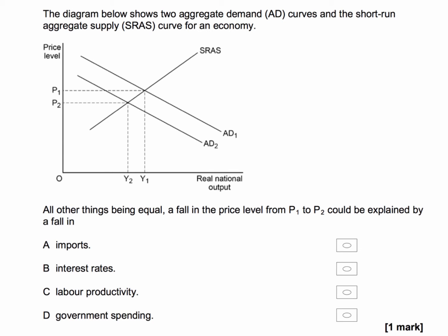The diagram below shows two aggregate demand curves and the short run aggregate supply curve for an economy. All other things being equal, a fall in price level from P1 to P2 could be explained by a fall in something.